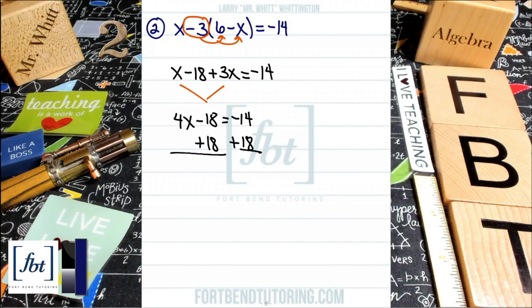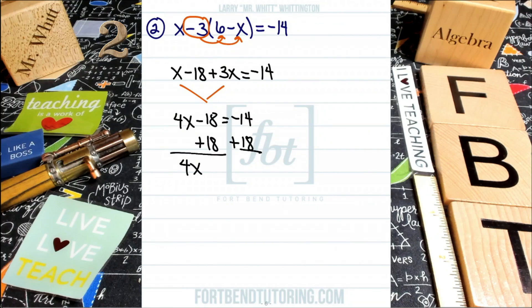We'll be bringing down 4x, combining our additive inverses, that negative 18, that positive 18, those opposites. They'll combine to cancel out. And then this will be equal to positive 4. That's right. The result of negative 14 and 18 when combined.